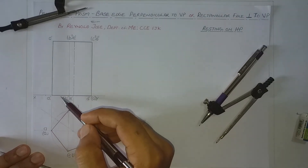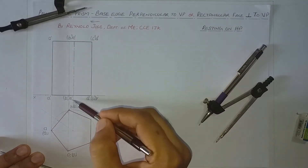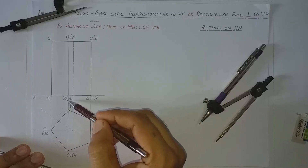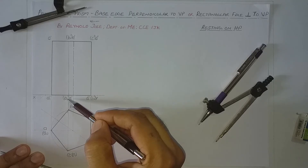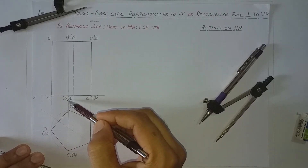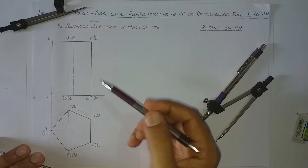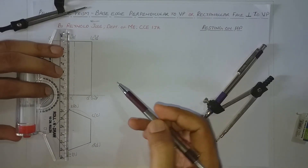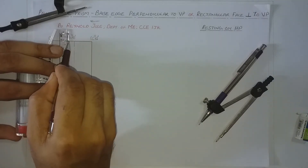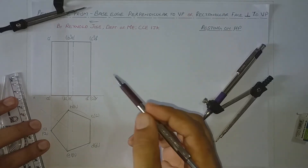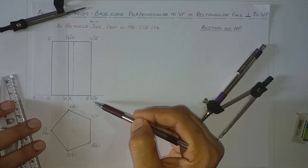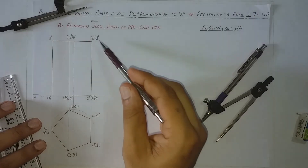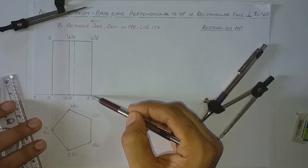The lateral edge BB1 would be represented as a dashed line, but along the same line we also have lateral edge EE1. Since visible and invisible coincide, we represent only the visible lateral edge EE1. Similarly, CC1 would be invisible, but along the same line we have DD1 — so we represent DD1 as a thick line. That is why we have already drawn a thick line there.